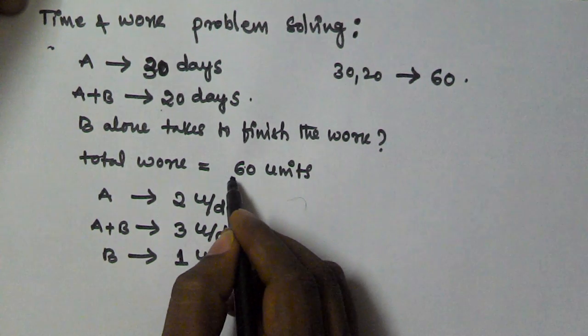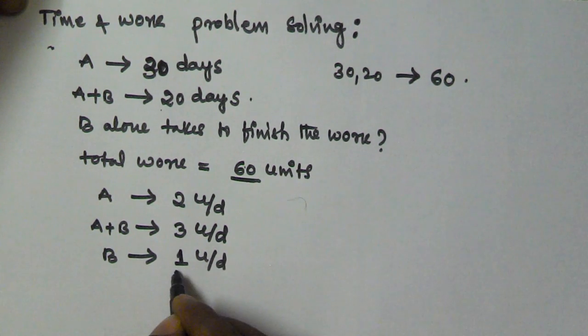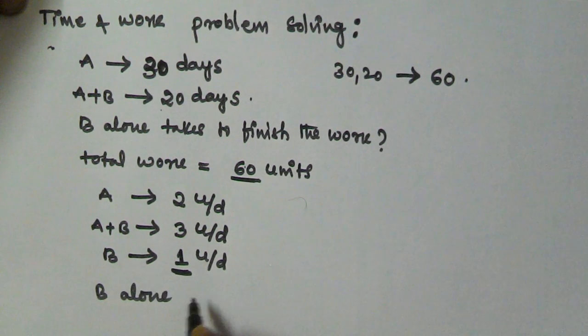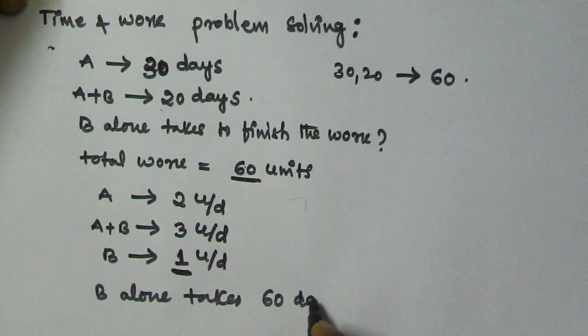The total number of units are 60, and B alone is working 1 unit per day. That means B alone takes 60 days to finish the work.